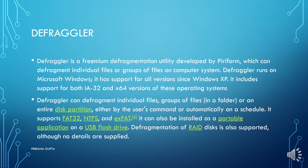Defragler is a freemium defragmentation utility developed by Piriform, which can defragment individual files or groups of files on a computer system. Defragler runs on Microsoft Windows and has support for all versions since Windows XP, including both IA32 and x64 versions. Defragler can defragment individual files, groups of files, or an entire disk partition either by user command or automatically on a schedule. It supports FAT32, NTFS, and exFAT. It can also be installed as a portable application on a USB flash drive, and defragmentation of RAID disks is also supported.